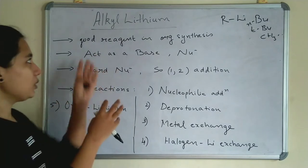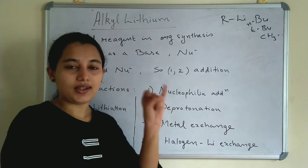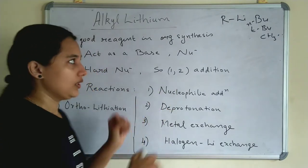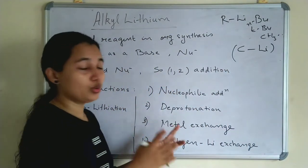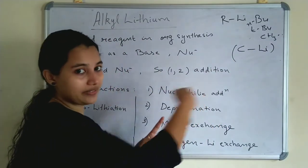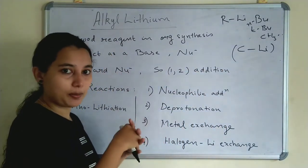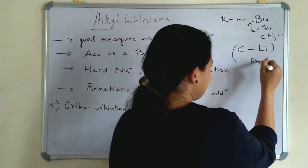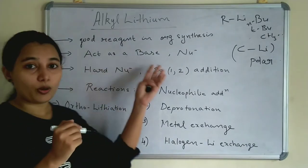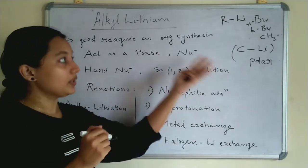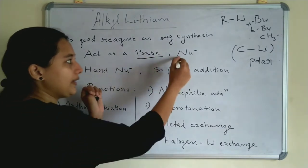Alkylithium is a good reagent in organic synthesis. It is a compound which contains a carbon-lithium bond. Due to the huge electronegativity difference between carbon and lithium, these bonds are highly polar. So carbon-lithium bonds are polar. Importantly, Alkylithium can act as a base and as a nucleophile.